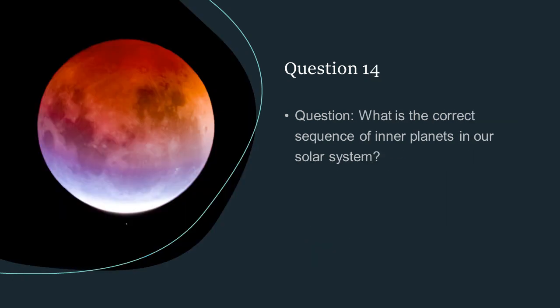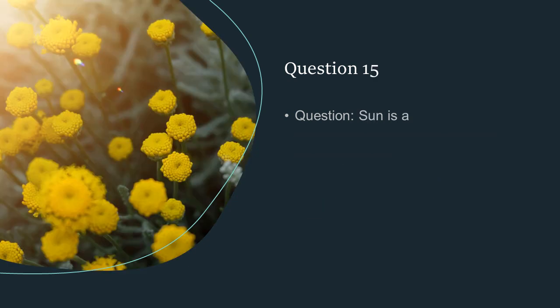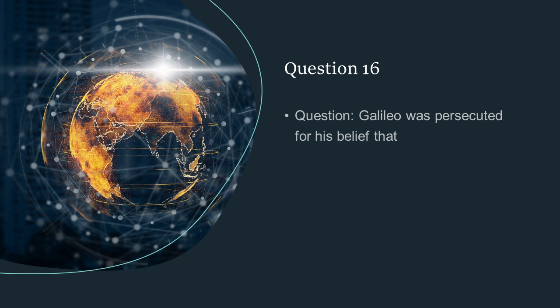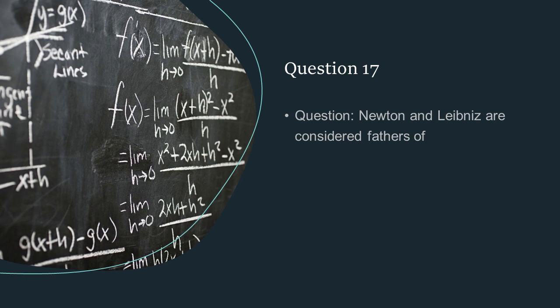What is the current sequence of inner planets in our solar system? Mercury, Venus, Earth, and Mars. Sun is a yellow dwarf star. Galileo was persecuted for his belief that Earth moves around the sun. Newton and Leibniz are considered fathers of calculus.